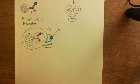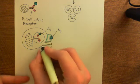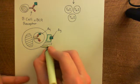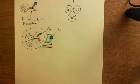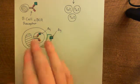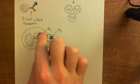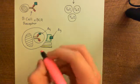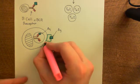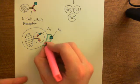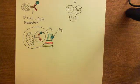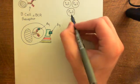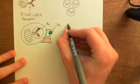So we'll have CD40 in yellow here, and then in pink, that's either B7.1 or B7.2. Now, what's going to happen is one of these T helper 2 cells is going to come along, and we know this has a complementary T-cell receptor for this antigen.